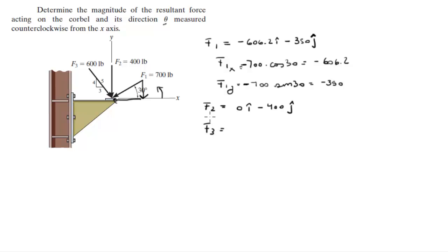F3 is this force right here and this force right here. It has an x component and a y component. Now the x component, which is this one, is given by 600 times 3 over 5, and it's going positive. And the y is going negative and it's 600 times 4 over 5.